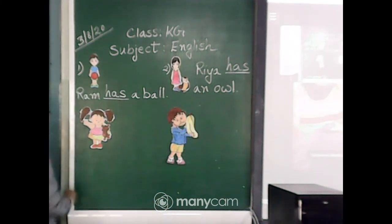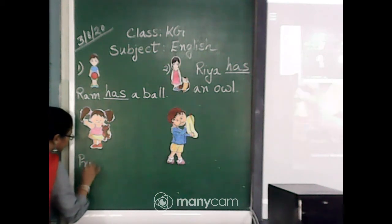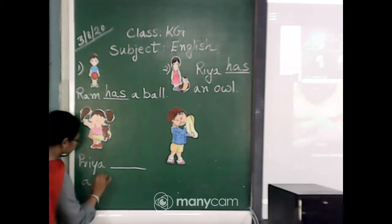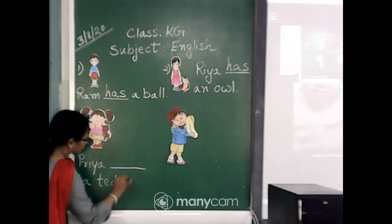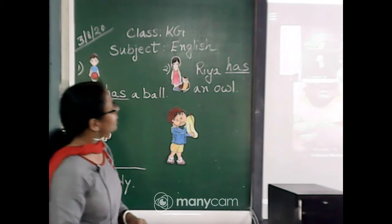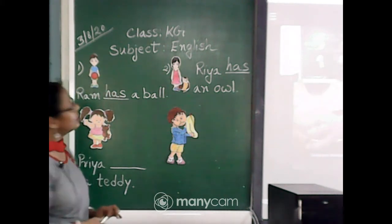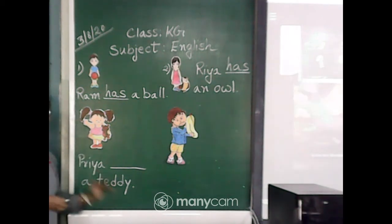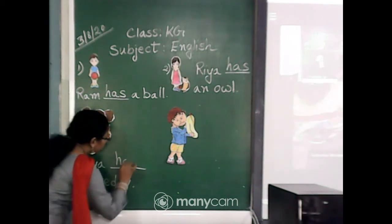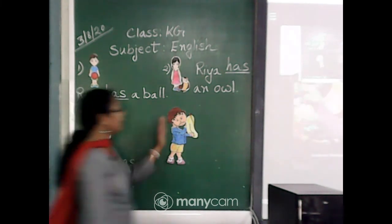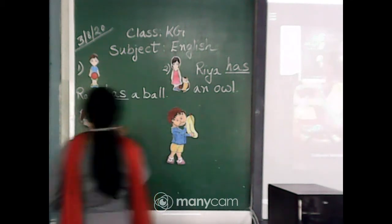Next comes — let's call this one Priya. So Priya dash a teddy. She is standing, and what will you give as the answer? Very good — all my students are very intelligent. So, Priya has a teddy. This was number three.